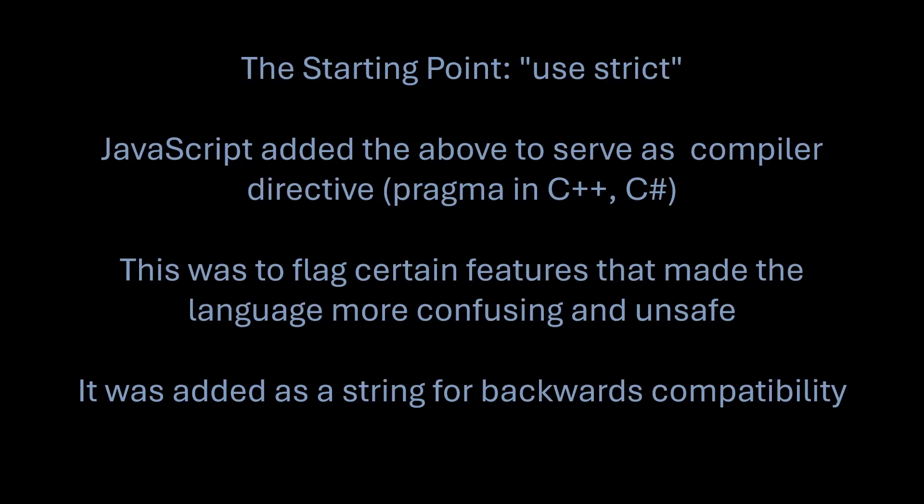What started this was the notion of the 'use strict' string. It literally is a string that you put at the top of a file or function. What it does is serve as a compiler directive — some people call these pragmas in C++, and C# also has pragmas. It's a way of telling the compiler to treat this code differently: disallow certain features, warn for certain things, produce errors, and make things more strict — not allowing things that were unsafe in older versions of JavaScript and the engines that ran them.